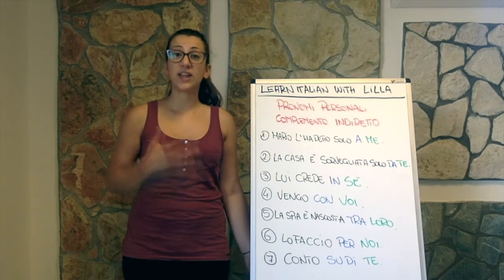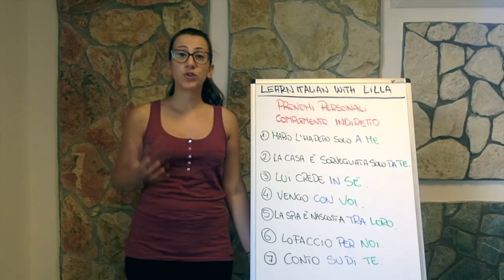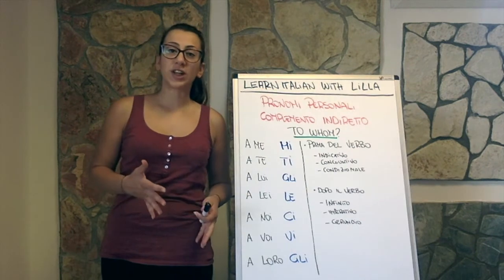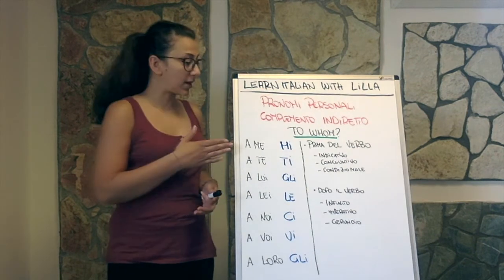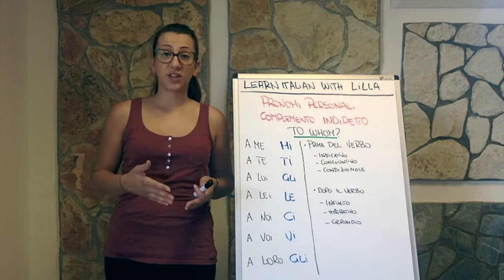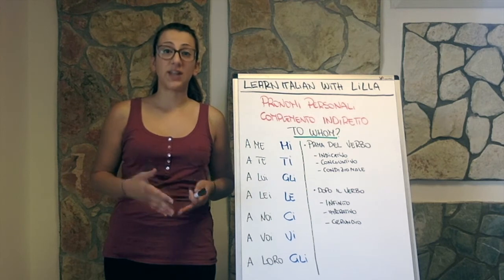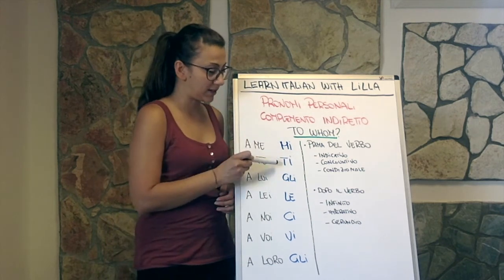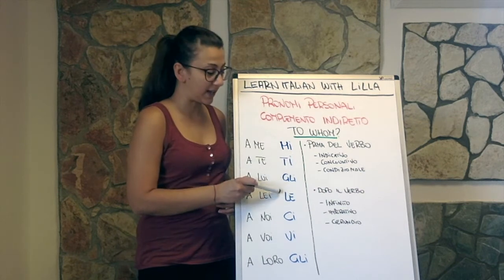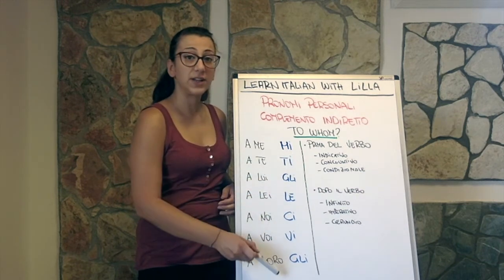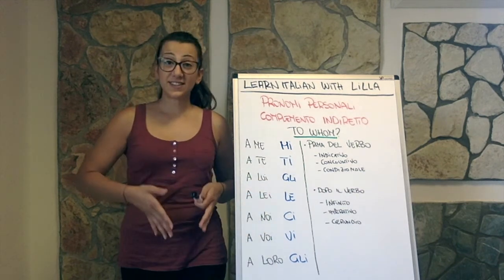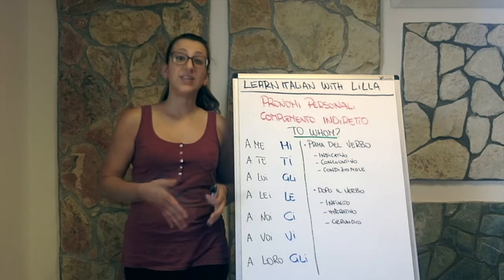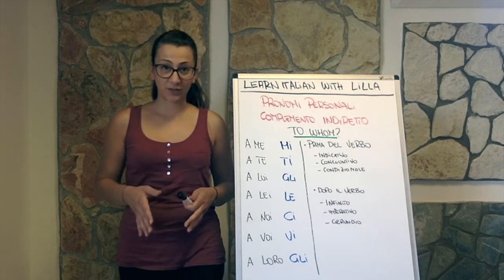Now let's take a look at the other pronouns we have when we're talking about 'to whom.' We can also use another form of the indirect object pronouns. They are: mi, ti, gli, le, ci, vi, gli. These indirect object pronouns work like the direct object pronouns.